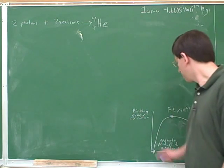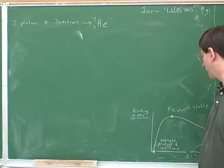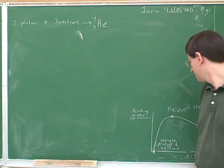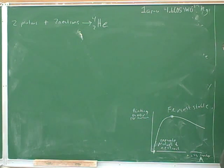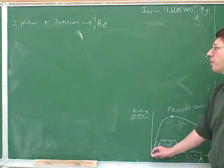In this reaction, where would we be? Are we going up the graph or down the graph? So where are we starting on the graph? We're starting with separate protons and neutrons, which are here. And where is helium?